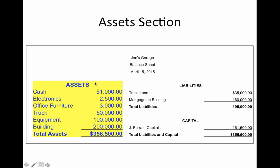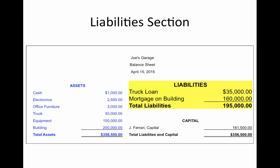Assets are a word that we use in accounting or financial management that means what we own. So if you look in here, this business — Joe's Garage's business — owns cash, has some electronics, has some office furniture, a truck, some equipment, and a building. All of these things the business owns. Notice, none of these are his personal items.